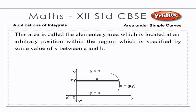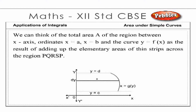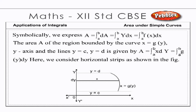This area is called the elementary area, which is located at an arbitrary position within the region specified by some value of x between a and b. We can think of the total area A of the region between the x-axis, ordinates x = a, x = b and the curve y = f(x) as the result of adding up the elementary areas of thin strips across the region. Symbolically, A = ∫ dA = ∫ₐᵇ y dx = ∫ₐᵇ f(x) dx. The area A of the region bounded by the curve x = g(y), the y-axis and the lines y = c, y = d is given by A = ∫_c^d x dy = ∫_c^d g(y) dy, considering horizontal strips as shown in the figure.